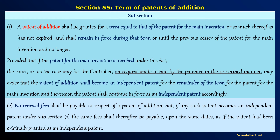For example, if the main invention is revoked and it was granted for 20 years — as we all know the term of a patent is 20 years — say after 5 years it is revoked. Now if the patent of addition is granted thereafter, that patent of addition will have the term of the remaining term of the main invention. That is, if 5 years has already gone, then the remaining term of 15 years will be the term of the patent of addition.